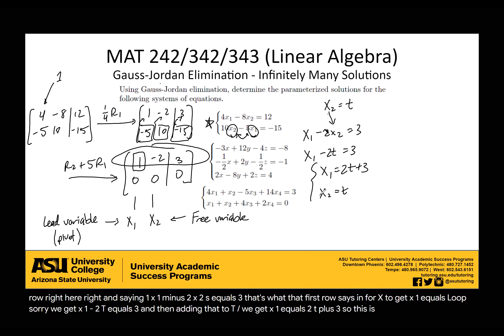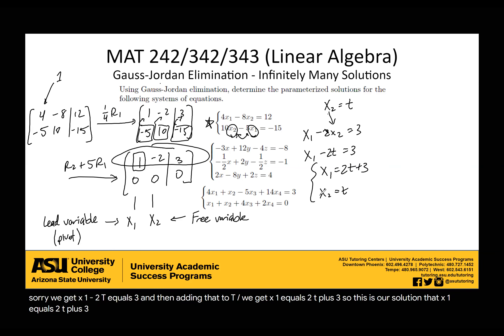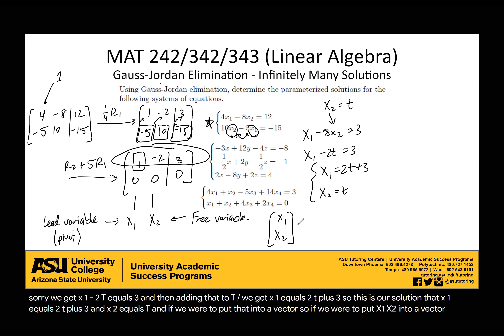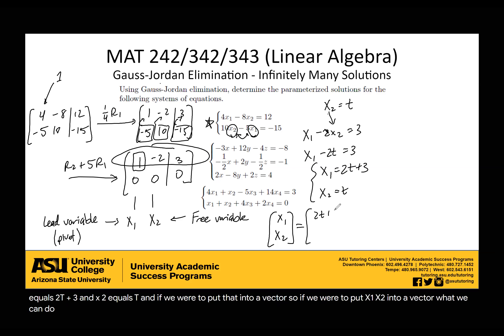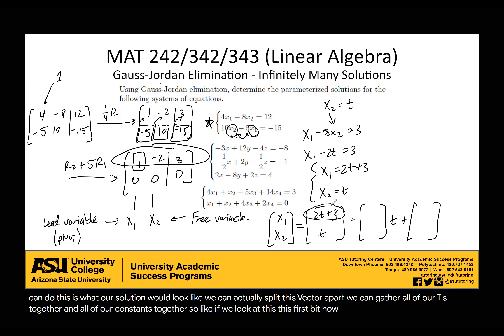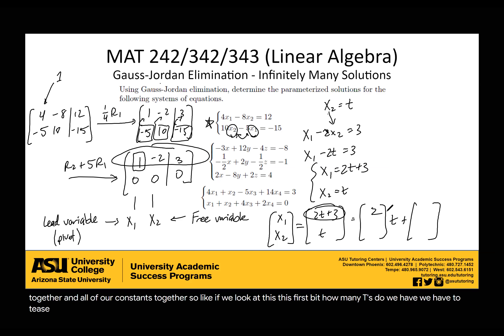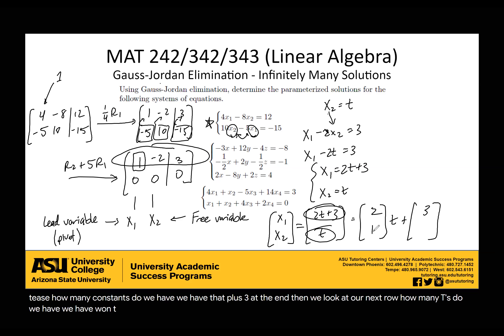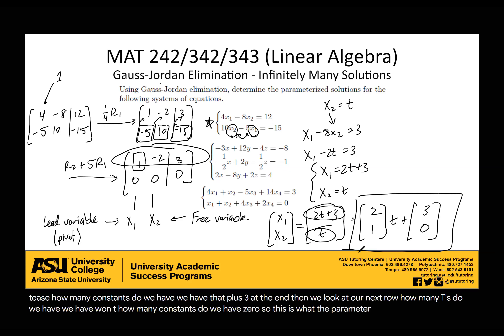So our solution is x1 equals 2t plus 3 and x2 equals t. If we put that into a vector — x1, x2 — we can split this vector apart by gathering all our t terms together and all our constants together. For x1: we have 2 t's and a constant of 3. For x2: we have 1 t and a constant of 0. This is what the parametrized form of our solution looks like.